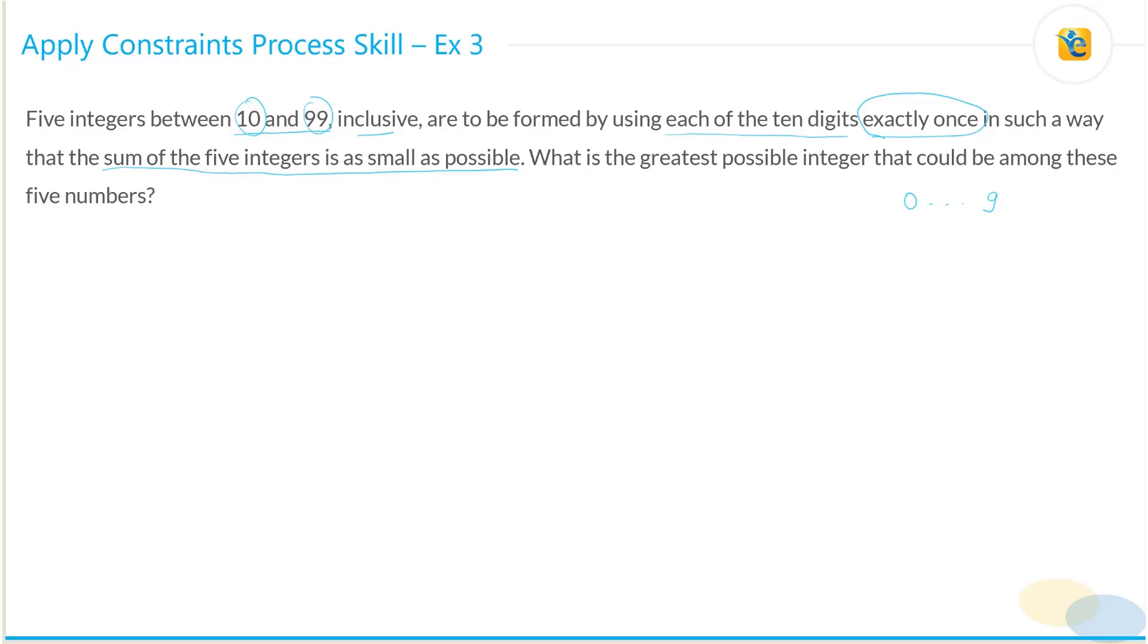Now if the sum is as small as possible, this implies what? We'll hold off on that. Let's just read what the question is asking. What is the greatest possible integer?